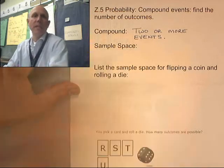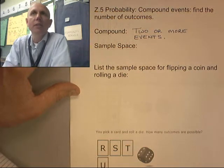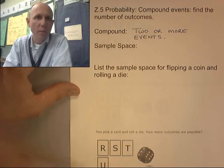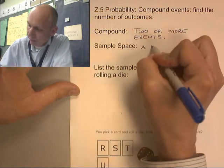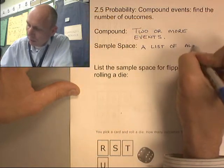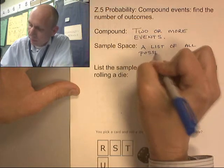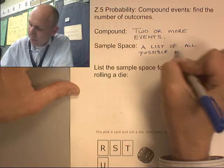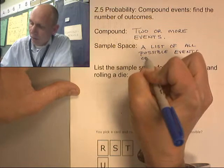Sample space. Sample space is a list of all possible events or outcomes.